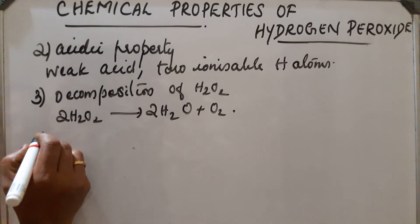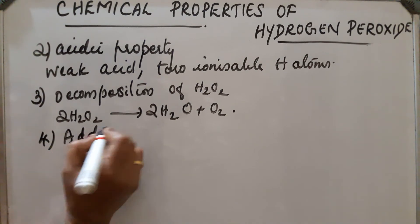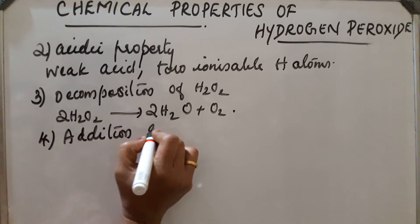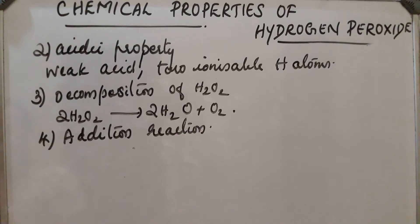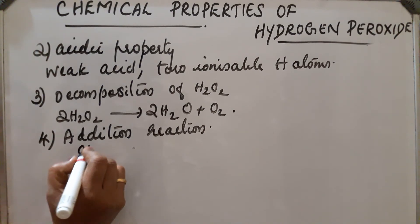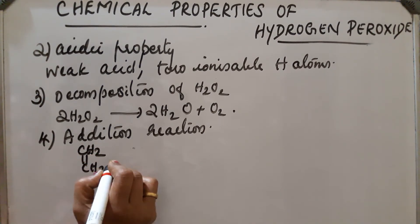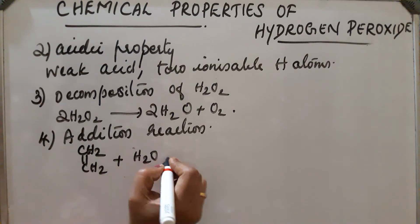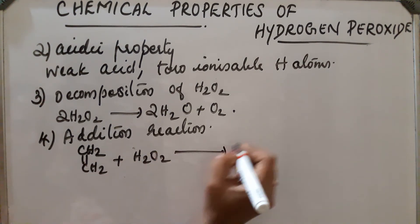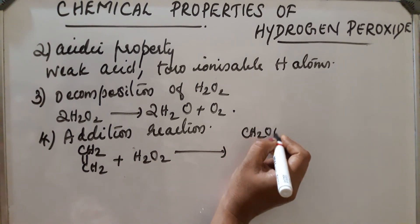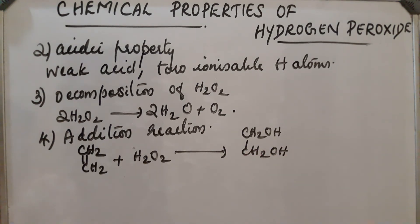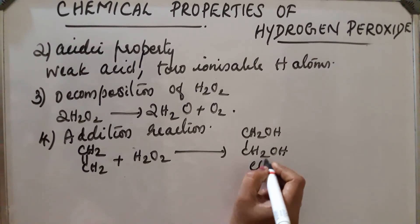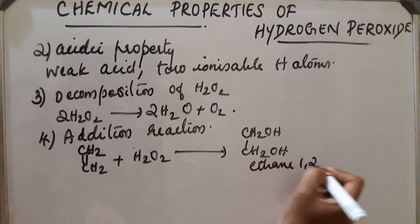Next: addition reaction. H₂O₂ is capable of adding itself to a double bond. Example: CH₂=CH₂ plus H₂O₂ gives CH₂OH–CH₂OH (ethane-1,2-diol). So an addition reaction takes place.